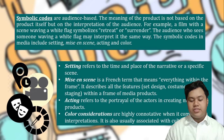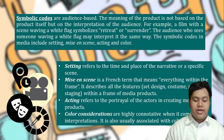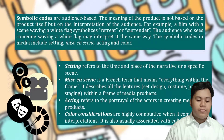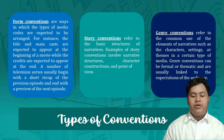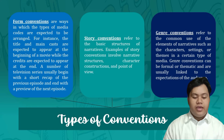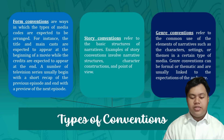Symbolic codes are audience-based. The meaning of the product is not based on the product itself but on the interpretation of the audience. It includes setting, mise-en-scène, acting and color. Conventions refer to the recognized ways of using media codes. The types of conventions include form conventions, story conventions and genre conventions. Form conventions are ways in which the types of media codes are expected to be arranged. Story conventions refer to the basic structures of narratives. And genre conventions refer to the common use of the elements of narratives such as the characters, setting or themes in a certain type of media.